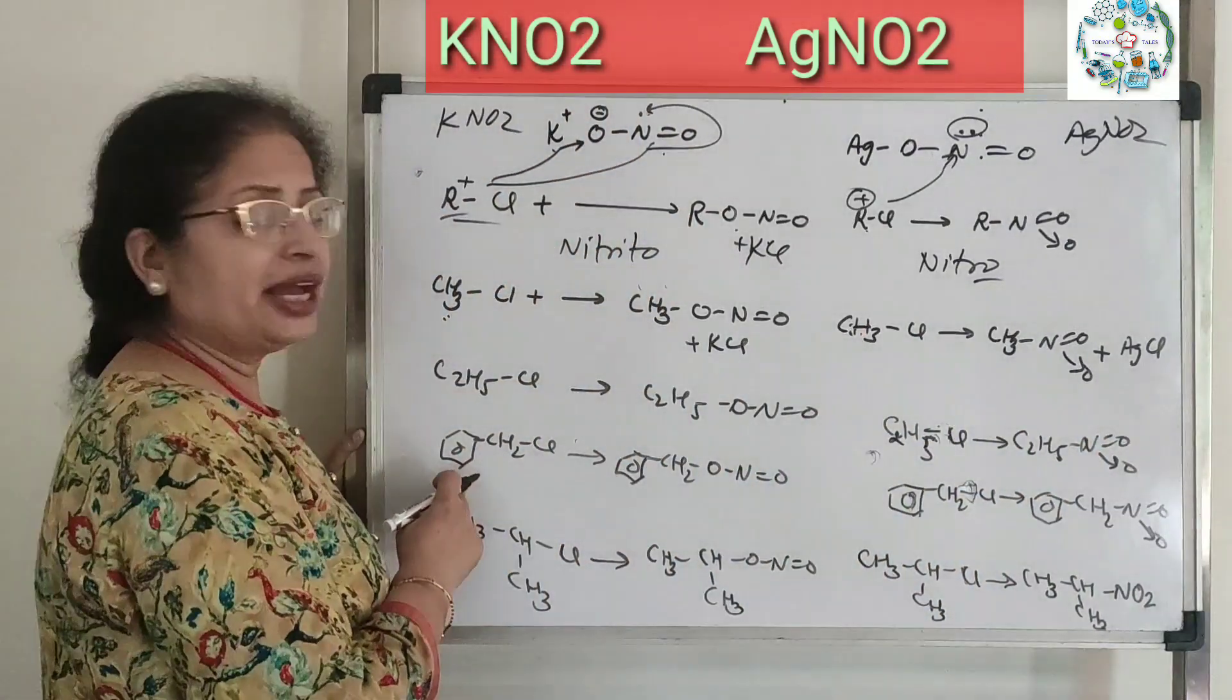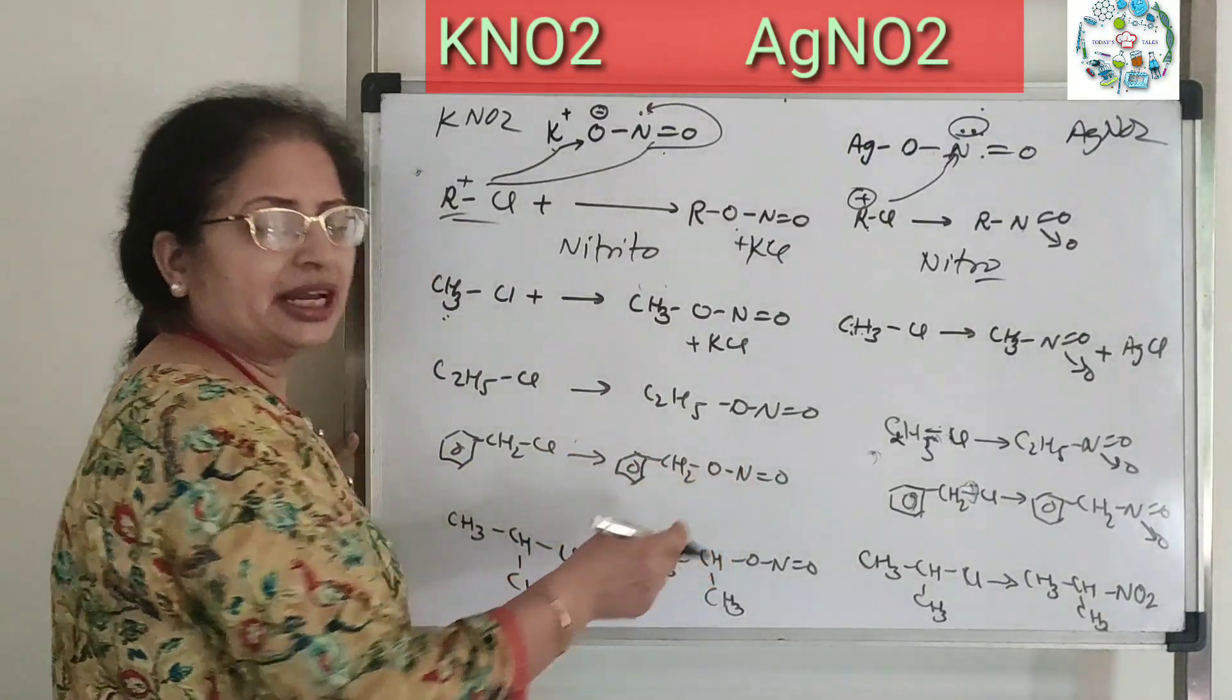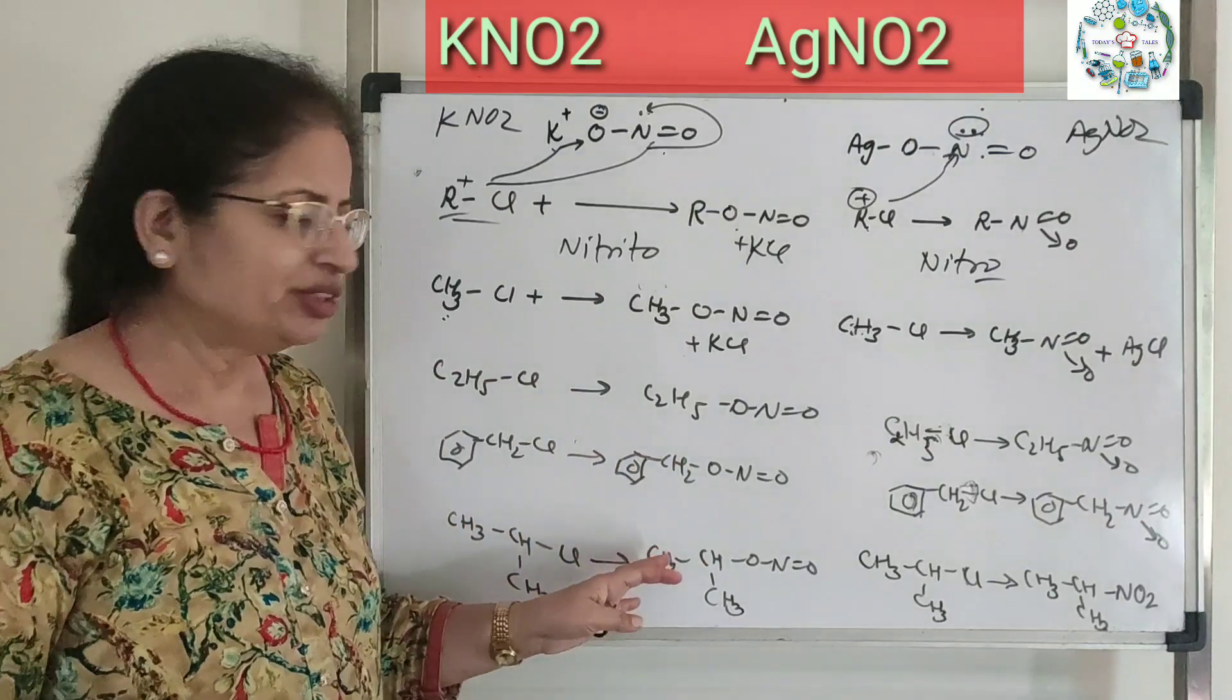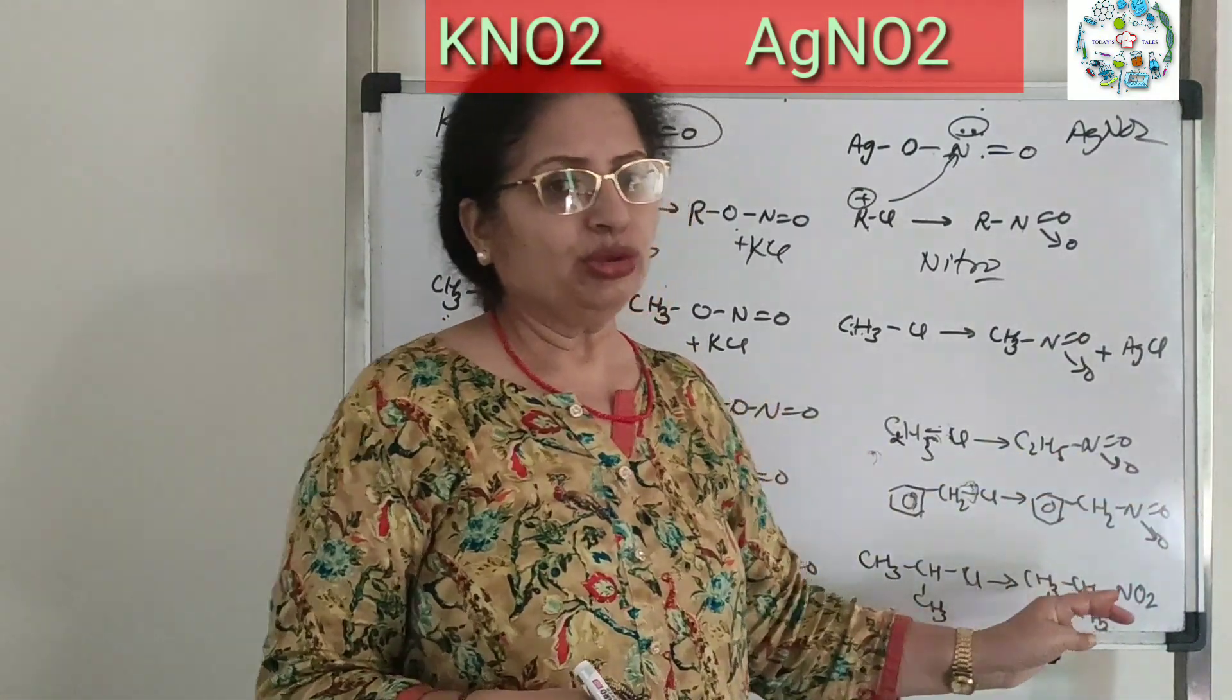Similarly, if you take benzyl as the R value, you get benzyl nitrite with KNO2, or you can call it nitrotoluene with AgNO2.